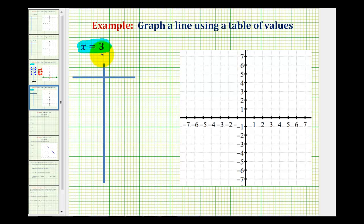Whenever a linear equation has just one variable, it's either going to be a vertical line or a horizontal line. But to get a better understanding, I think it's helpful to go back to a table of values or a t-table where the first column represents x and the second column represents y.